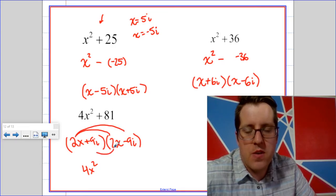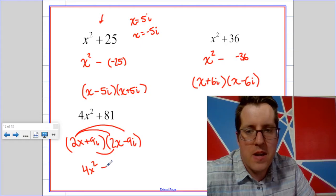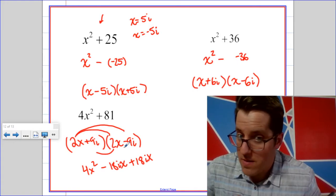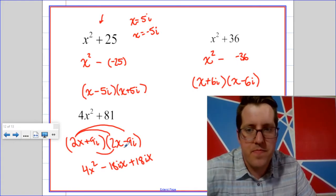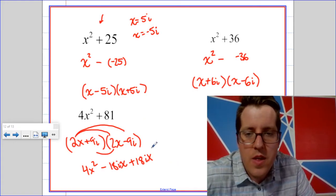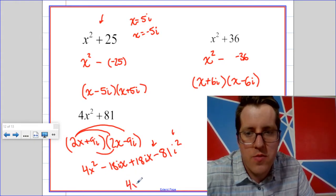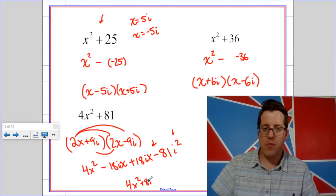My outers and my inners are going to be minus 18ix and plus 18ix. They cancel out there. And then we're going to get minus 81i squared. So this is minus a negative. So it does work out to 4x squared plus 81. We can take this a step further.